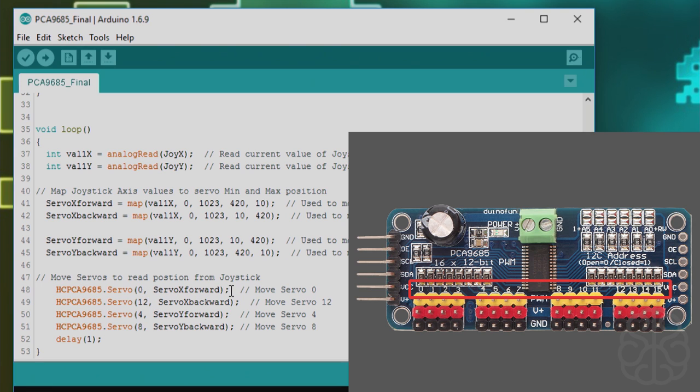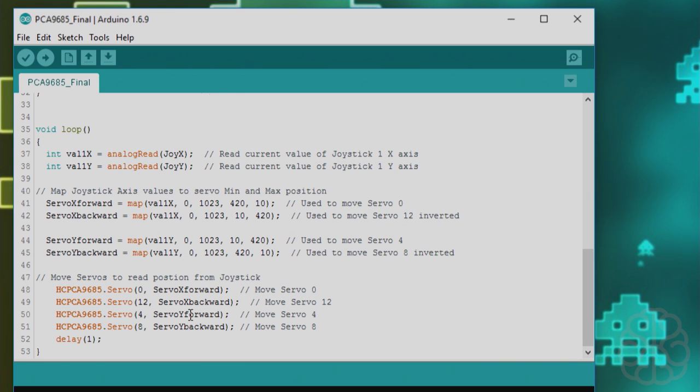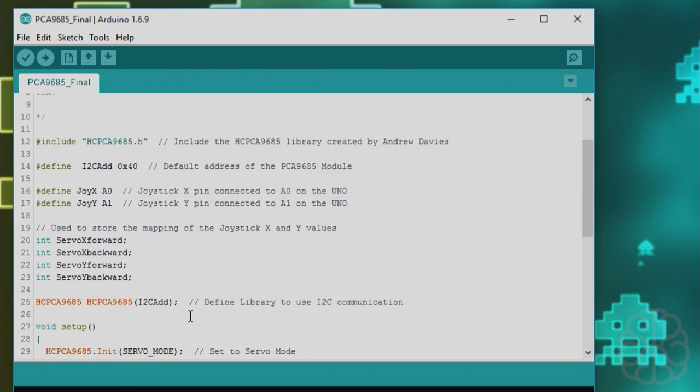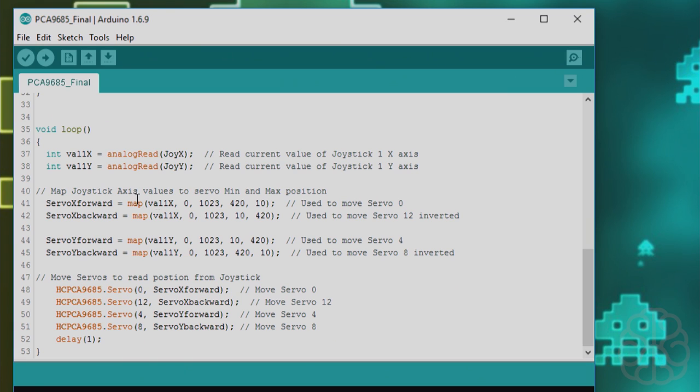With this library it's very simple. You just call the library dot servo, you select the channel that's connected on, and you say move to that position. That's it. It's going to loop through that, so as I move the joystick the mapping are changing and the servos are moving differently.